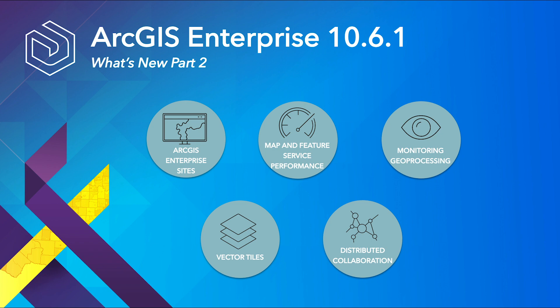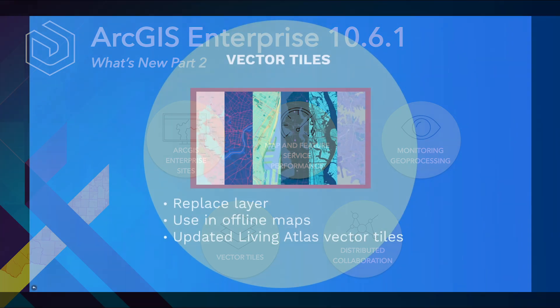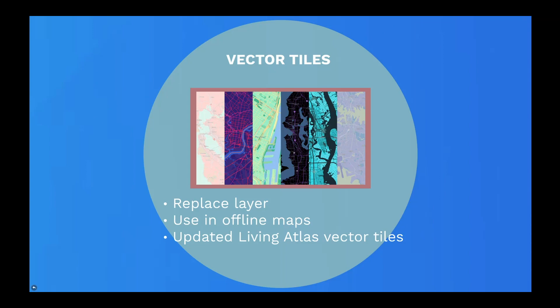Next up are capabilities for vector tiles. Vector tiles are performant layers that store the vector representation of their data. If you have been looking for the ability to replace an existing vector tile layer, 10.6.1 has the answer. You will see a new function to replace vector tiles on the item in the Enterprise Portal. This replaces the data while retaining the original item ID and URL. When you replace a tile layer, make sure the projection, tiling scheme, and layer names are the same in both the existing and replacement layers.